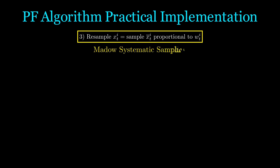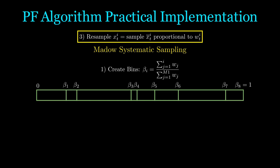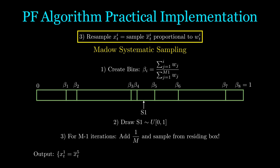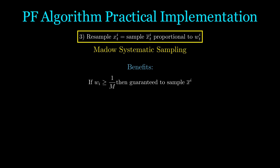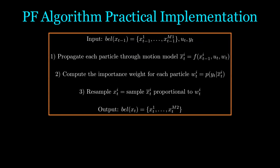Let's talk about how to implement specific steps. Resampling is an important one. Mulder's systematic sampling is a very popular method. Essentially, we create bins where the size is proportional to the weight. Say we have 8 particles — beta_8 is always going to be equal to 1. Step 2 is to draw a random number from 0 to 1; whichever bucket it lands in, that's the sample we take for the output distribution. Assuming you want to draw M samples — in the visualization here M equals 8, but it doesn't have to equal the number of buckets — we increment by 1 over M and add the corresponding sample to our output list. There are two main benefits: first, if a particle has importance weight greater than or equal to 1/M, we're guaranteed to sample it, which reduces variance. And we can efficiently implement this in O(M) time, where M is the number of particles.